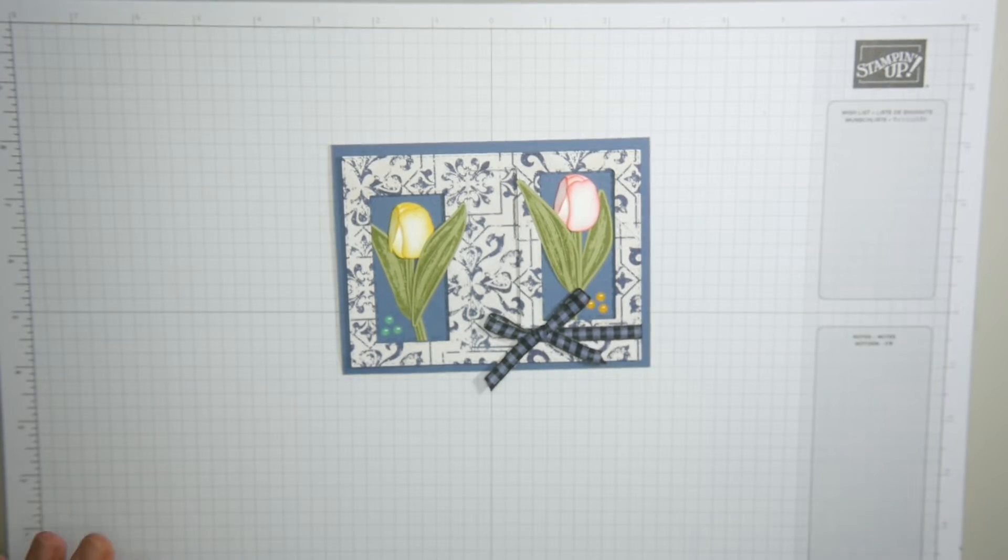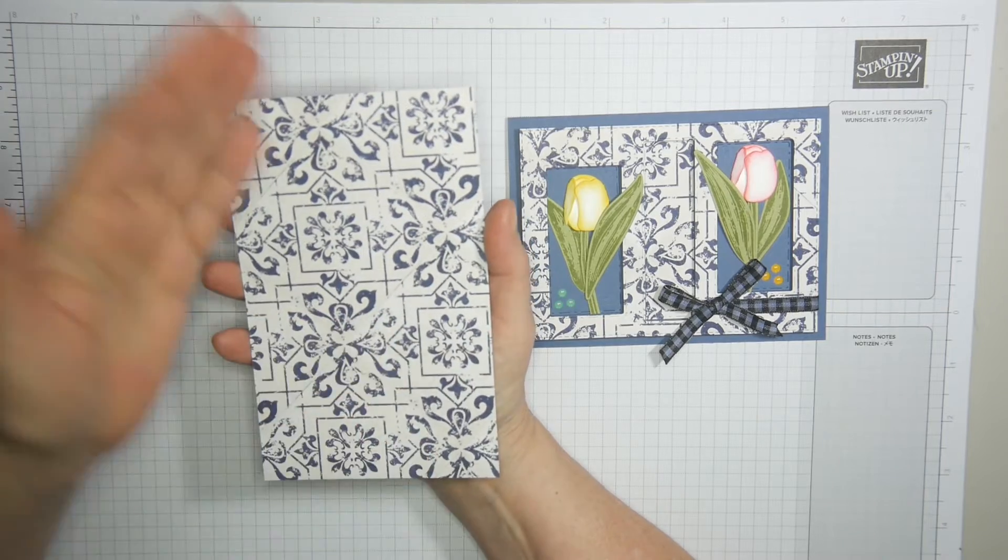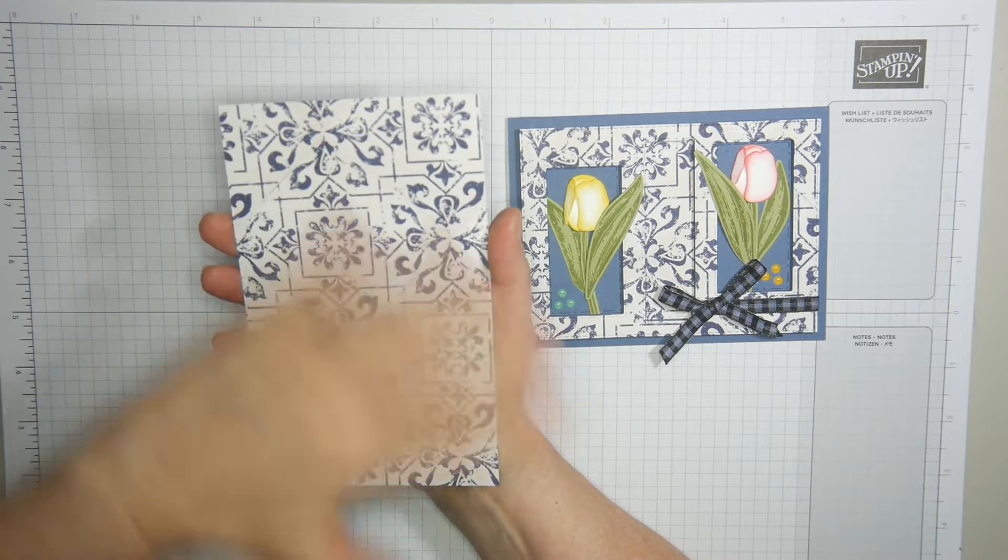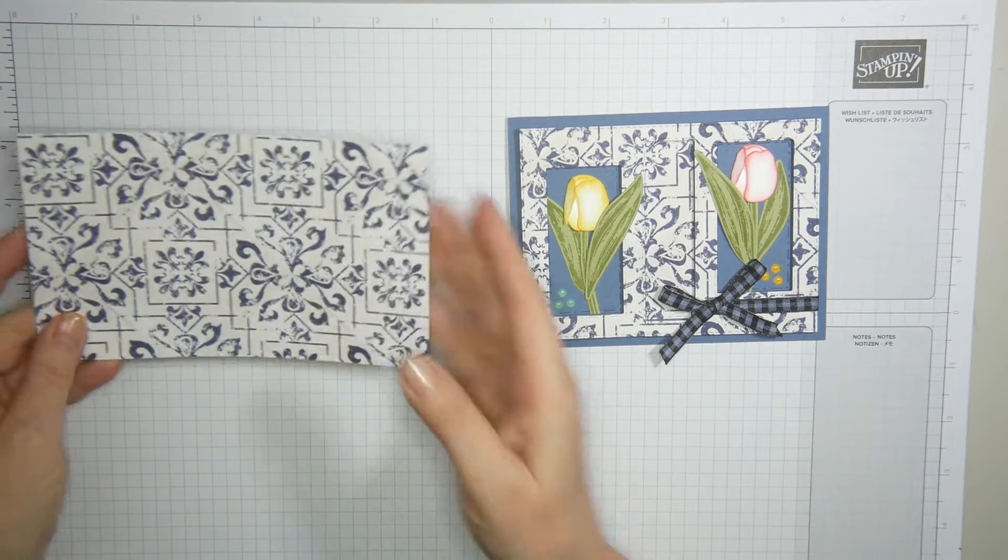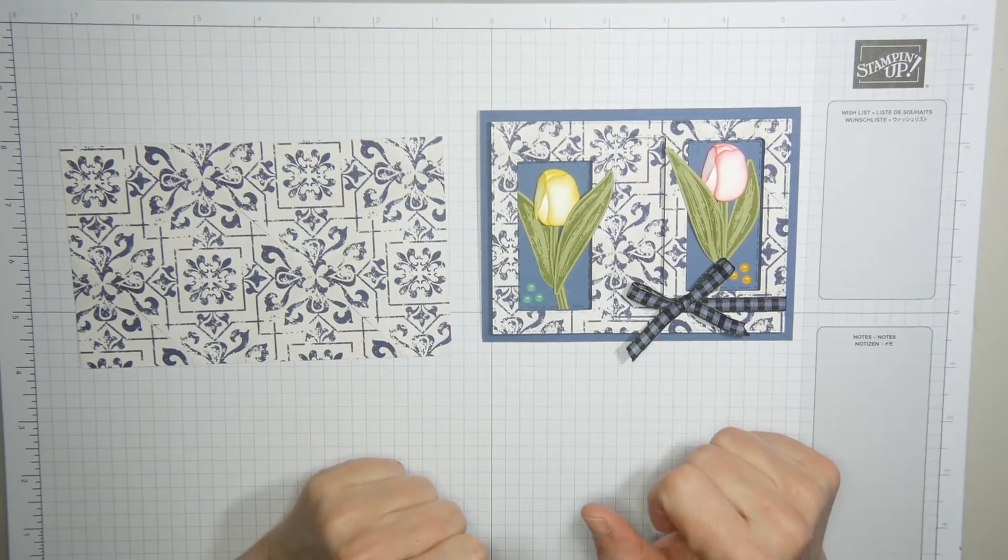The designer series paper In Good Taste has one of these sheets which has a look of Dutch Delftware tiles, and I thought to combine it with the beautiful tulips to make this Dutch spring card.